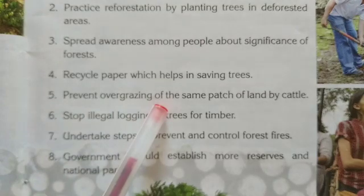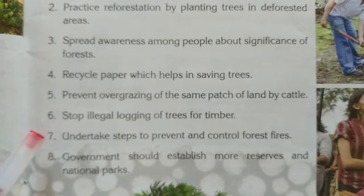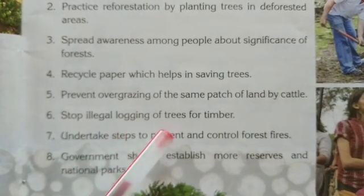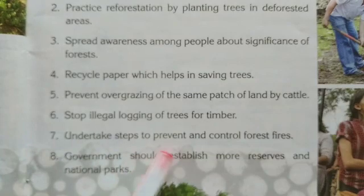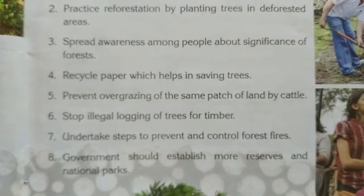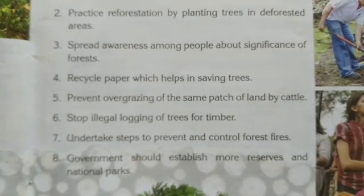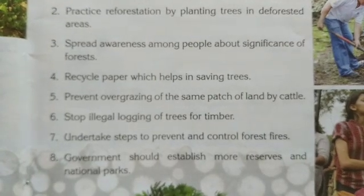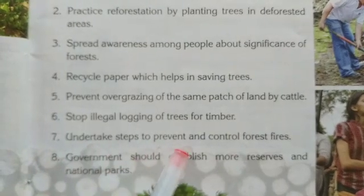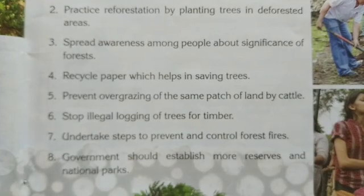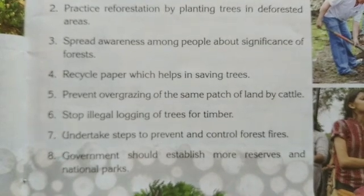Fifth, prevent overgrazing on the same patch of land by cattle. Sixth, stop illegal logging of trees for timber. Seventh, undertake steps to prevent and control forest fires, as in some countries forests burn for months. Eighth, the government should establish more reserves and national parks.